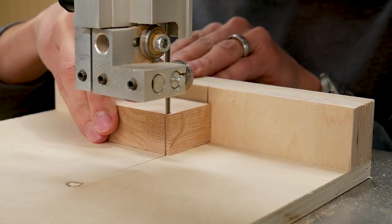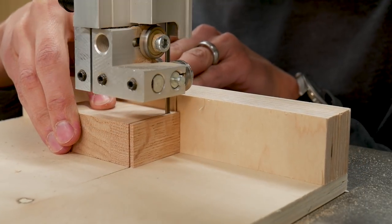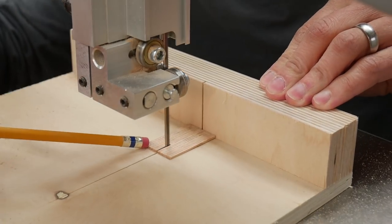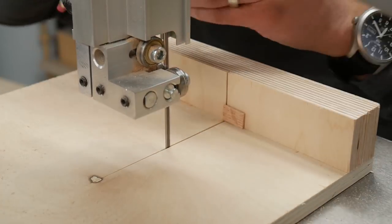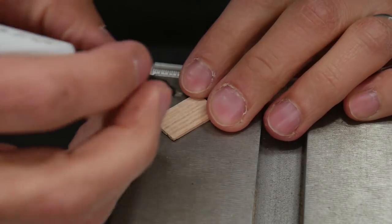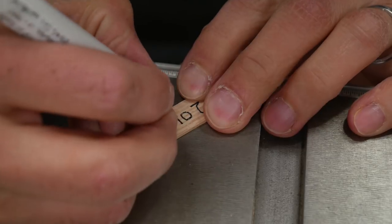As that was drying, I went back to my bandsaw and cut a scrap piece of wood down to make a little sign. I used a permanent marker to write 2017 on the sign.